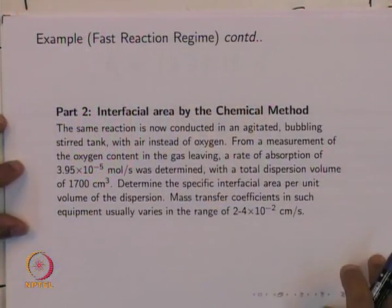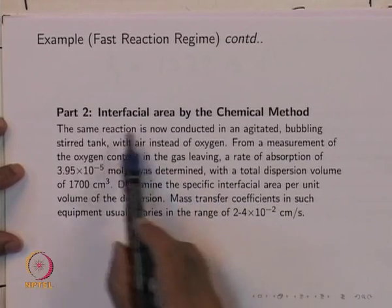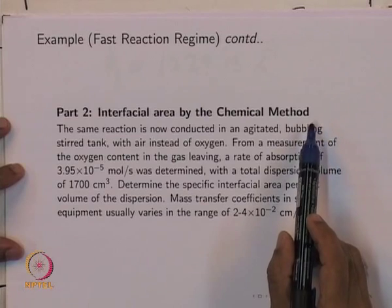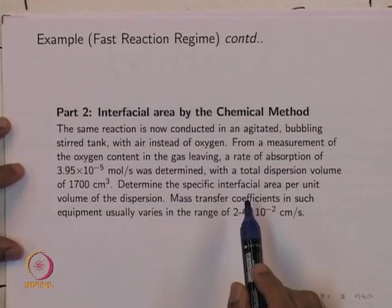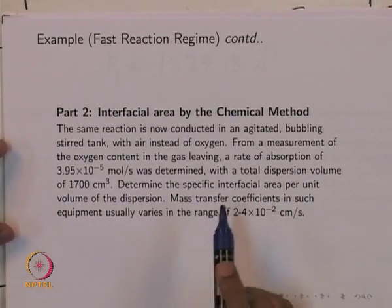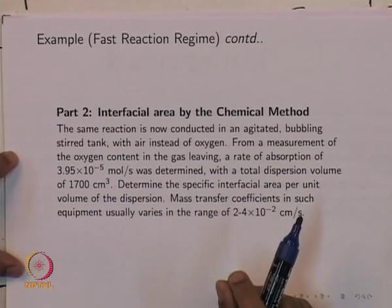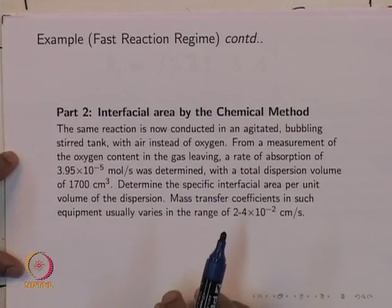That completes the first part of the problem. The second part involves the calculation of interfacial area by the chemical method. Now that the reaction has been characterized in terms of its rate constant, we can take the same reaction and put it into another gas-liquid contacting vessel where the contacting pattern is more complicated — for example, a sparging vessel with bubbles, gas hold-up, and uncertain interfacial area. We can use this well-characterized reaction to calculate the interfacial area, provided we can arrange a fast reaction regime in that vessel as well.